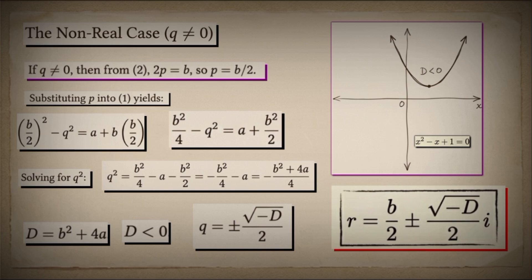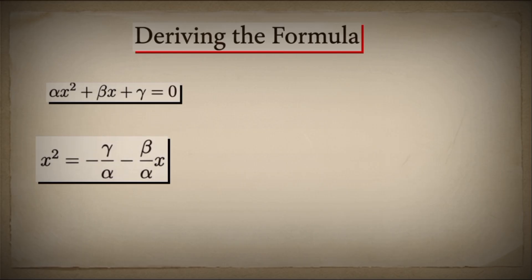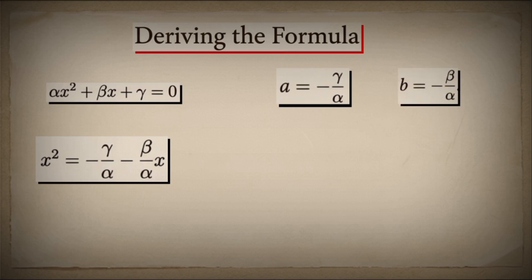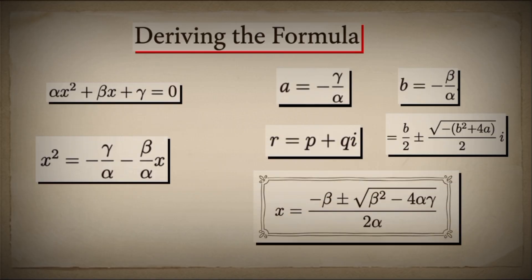Now we claim our prize: the quadratic formula itself. For a general quadratic, alpha X squared plus beta X plus gamma equals zero, we divide through by alpha and rearrange to match our system's rule: X squared equals negative gamma over alpha, plus negative beta over alpha times X. This means A equals negative gamma over alpha, and B equals negative beta over alpha. Substituting these values into our solution for R, we derive the famous formula: X equals negative beta plus or minus the square root of beta squared minus 4 alpha gamma, all divided by 2 alpha.